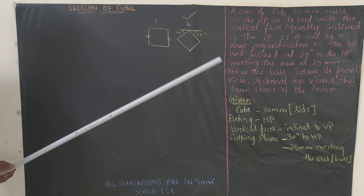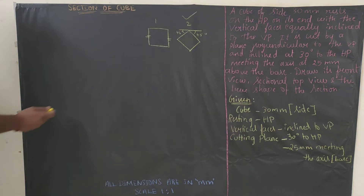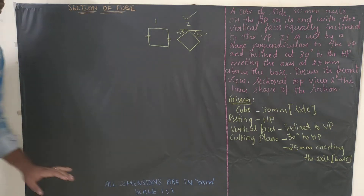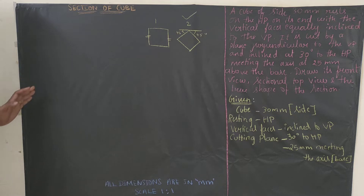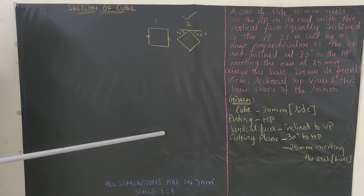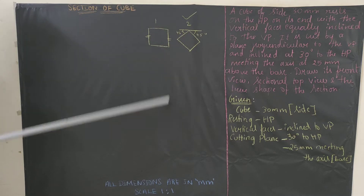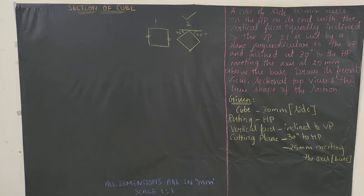We know we are going with type 2. The square rests on HP, so we draw the base diagram toward the right-hand side of the page, because we will also be drawing the true shape of the section. If you draw at the end of the page, there won't be space for the true shape. Draw the base square here, then the top view, front view, cutting plane, sectional top view, and true shape. This is the procedure we will follow.